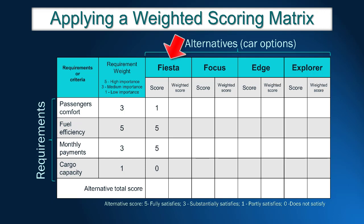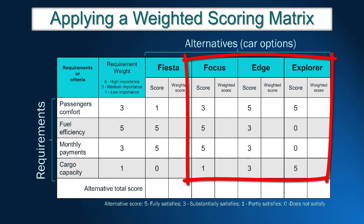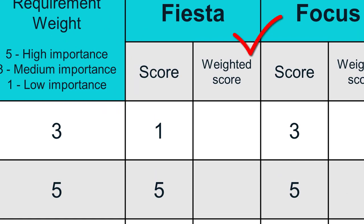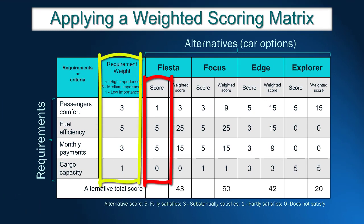In the following step, we evaluate each alternative on each requirement. Let's start with Ford Fiesta. John thinks this car partially satisfies the comfort requirement, so Fiesta receives score 1. In terms of full efficiency and payment, Fiesta receives the highest score — 5 — because it is the cheapest and has the best fuel efficiency. For cargo capacity, Fiesta does not satisfy the needs and received score 0.